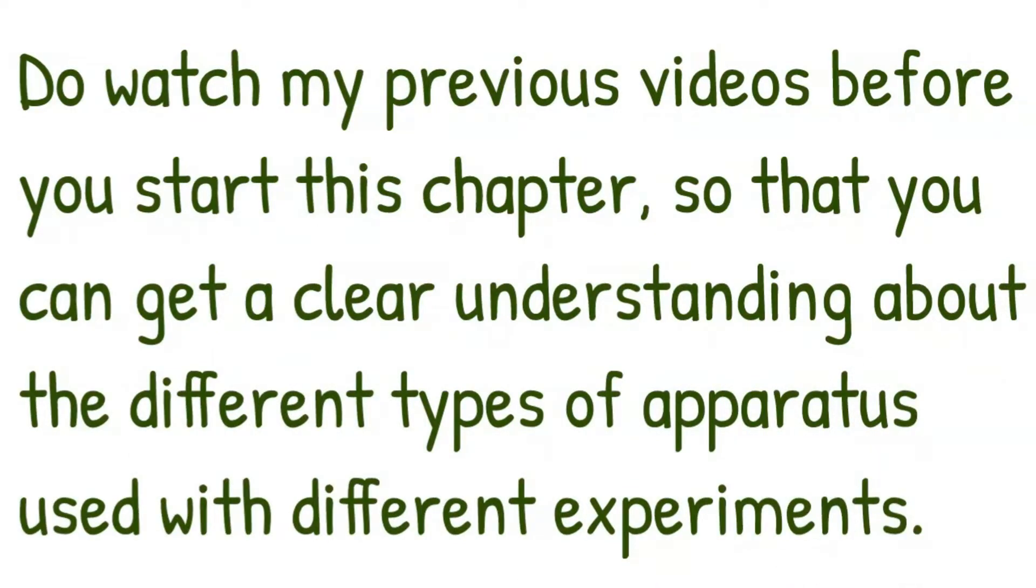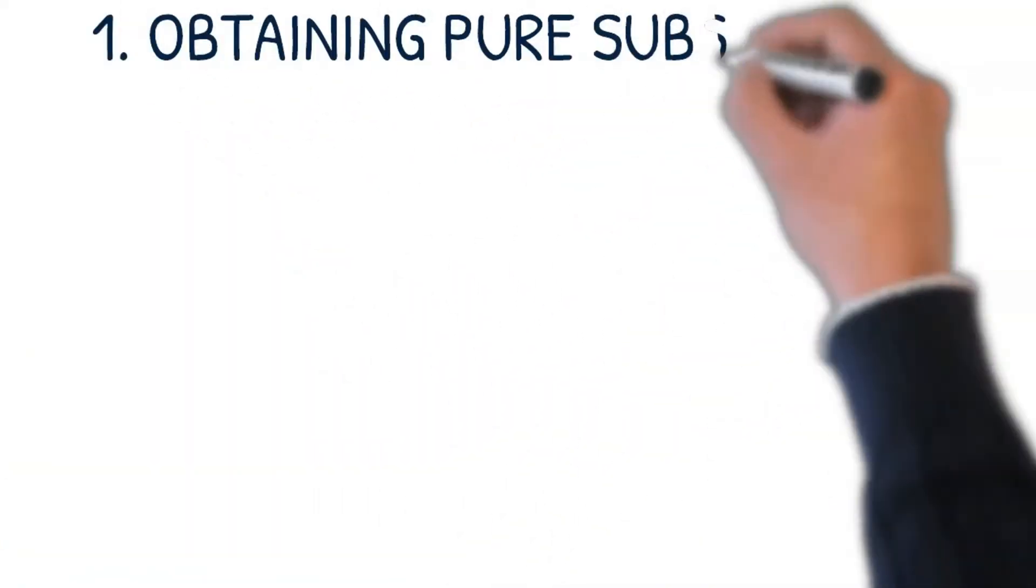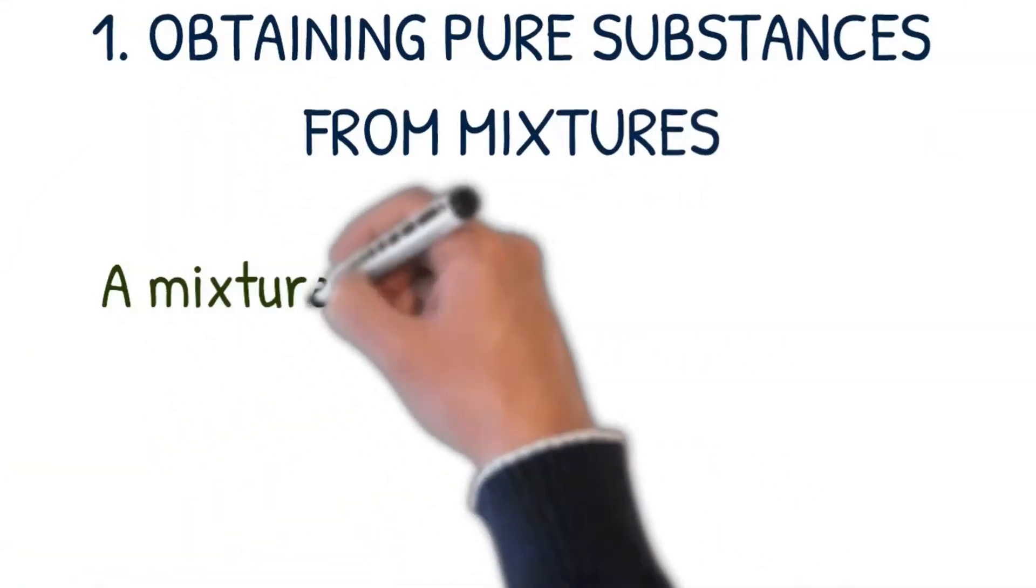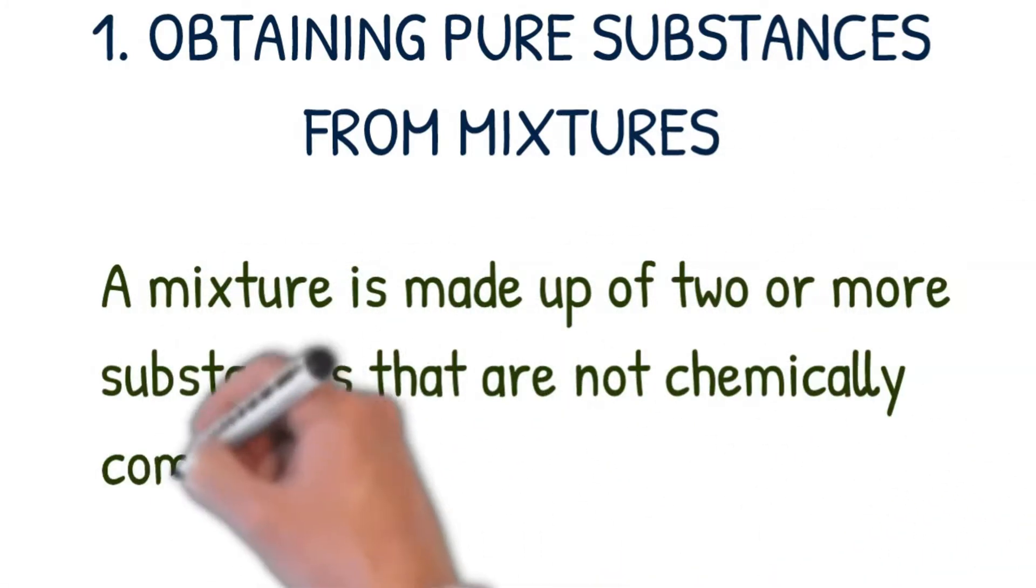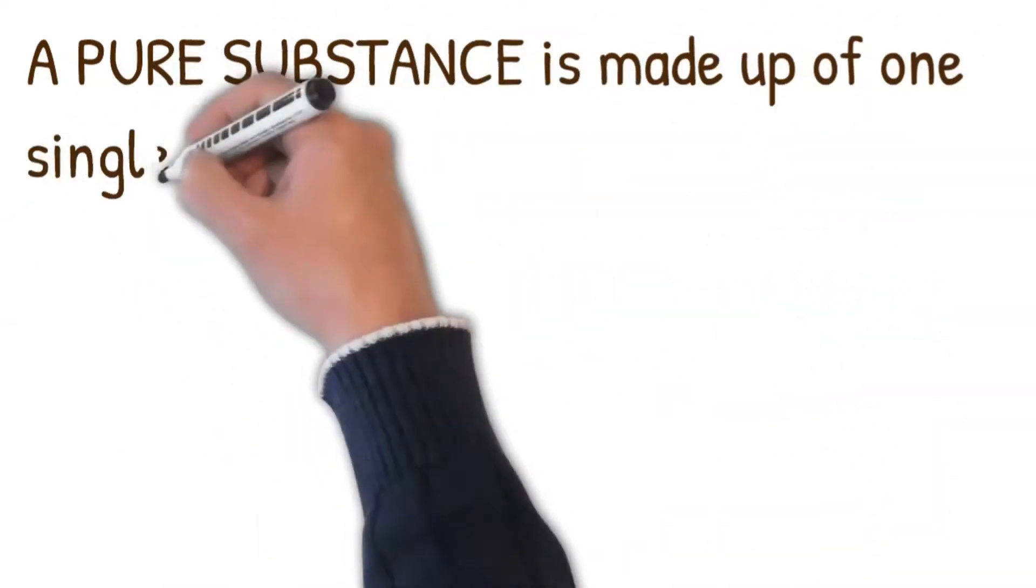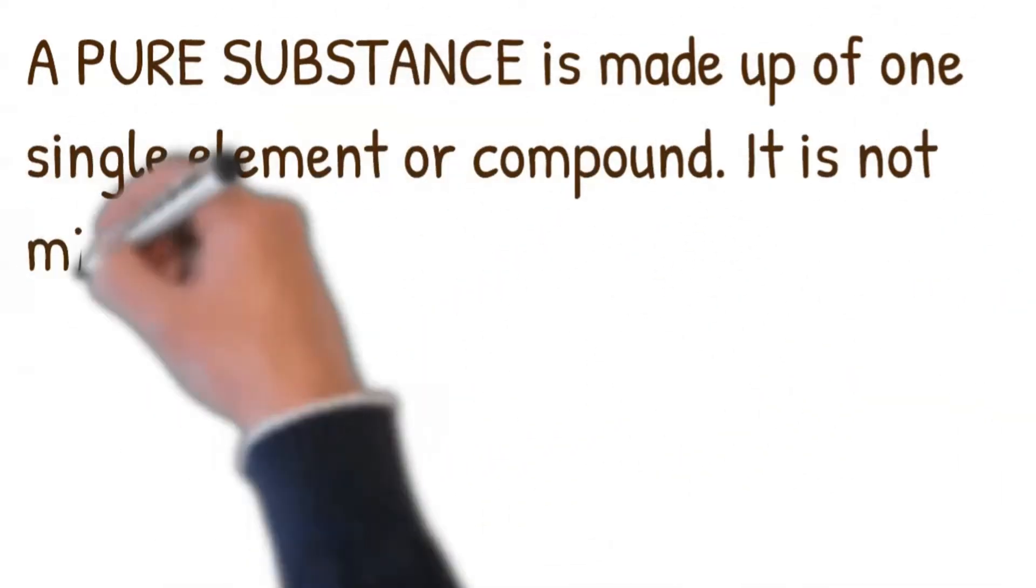Obtaining pure substances from mixtures. A mixture is made up of two or more substances that are not chemically combined. A pure substance is made up of one single element or compound. It is not mixed with any other substance.